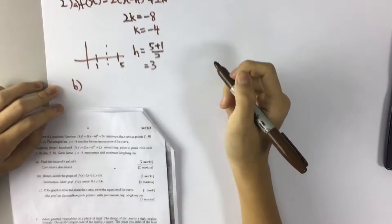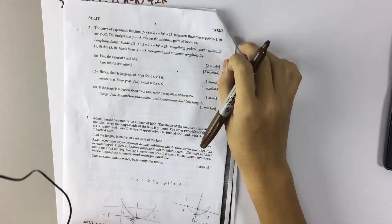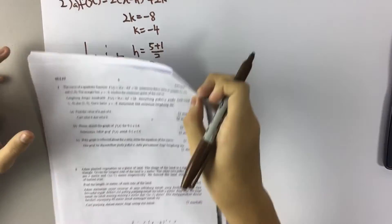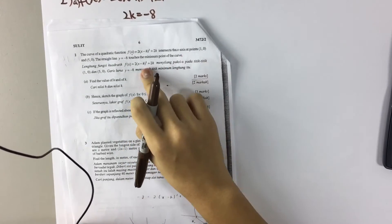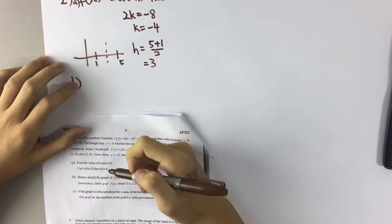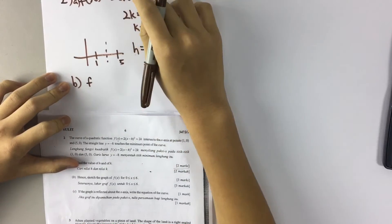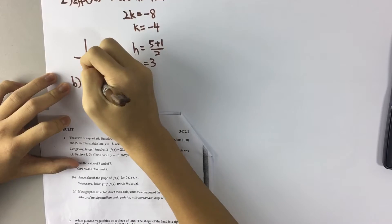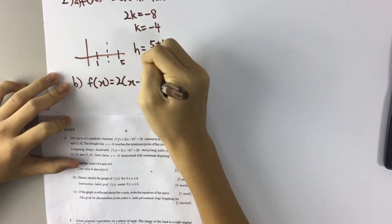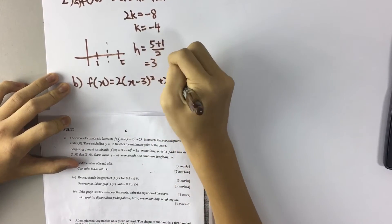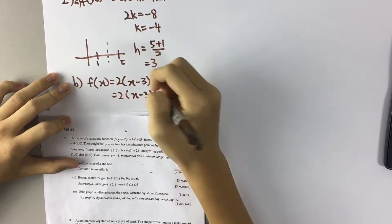Part B asks you to sketch a graph of fx when x is between 0 and 6. So you need to find the value of fx when x equals 0 and x equals 6, and find the value of x when y equals negative 8. I substitute h and k into the equation first to make it easier. fx equals to 2(x minus 3)² plus 2 times negative 4, which is 2(x minus 3)² minus 8.